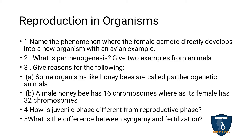Third question: Give reasons for the following. A) Some organisms like honeybees are called parthenogenetic animals. B) A male honeybee has 16 chromosomes whereas its female has 32 chromosomes.